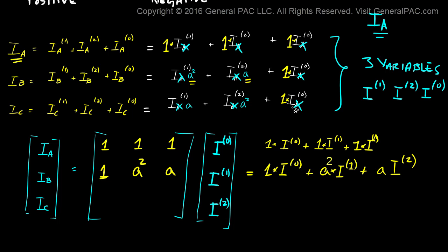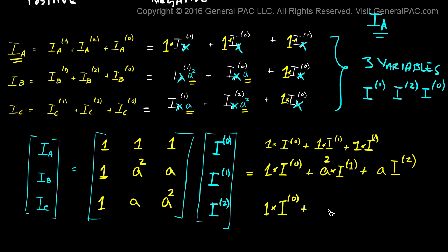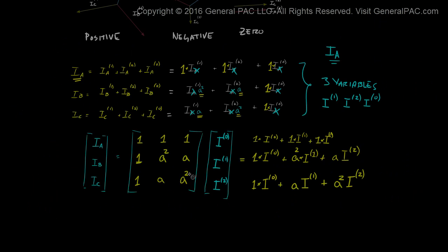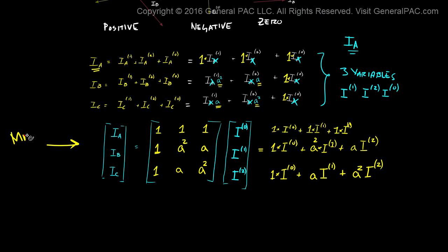For Ic, with respect to the zero sequence component, we just have one. For the positive sequence component, it has just the a operator. And then for the negative sequence component, we have a² . So Ic equals one times zero sequence component plus a times positive sequence component plus a² times negative sequence component. And there you have it — this is the matrix form representing our symmetrical components. This is a very common representation in many books and papers — this is essentially how the symmetrical components are derived.